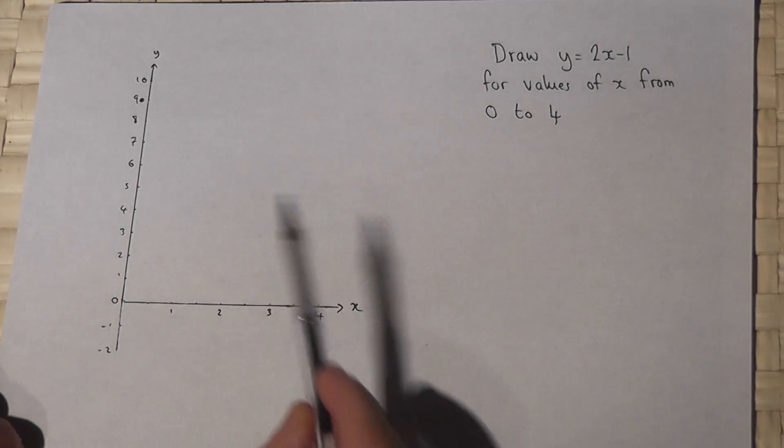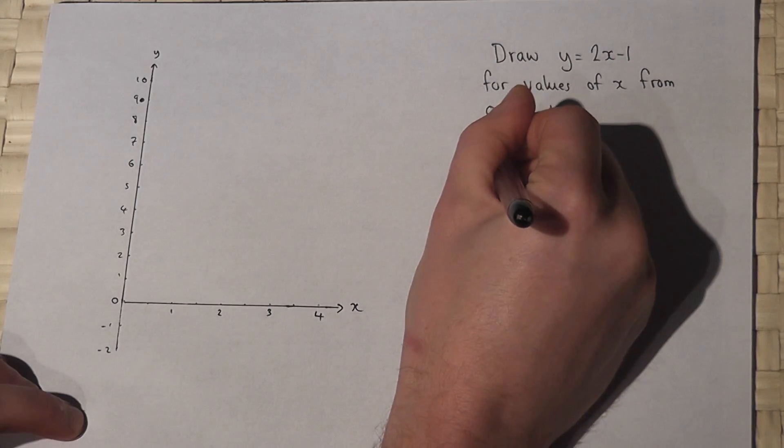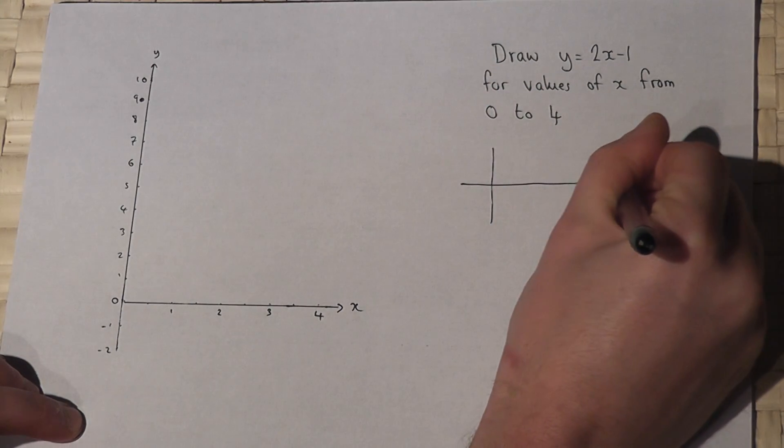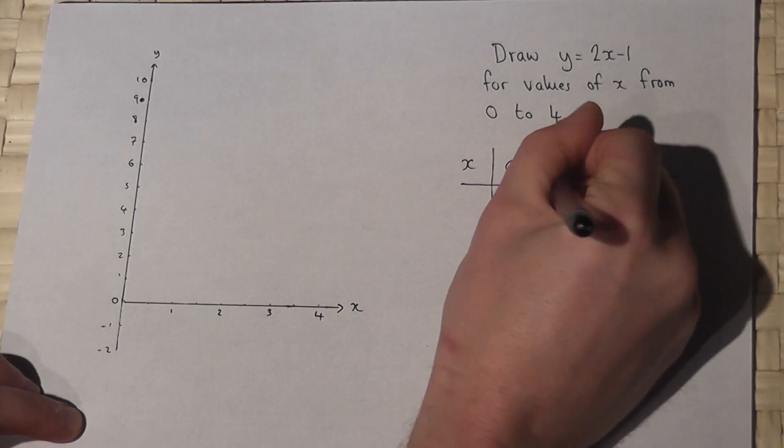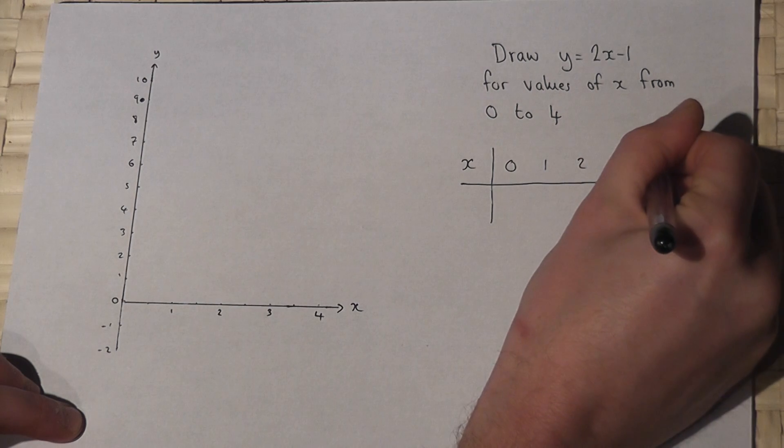Now there are lots of ways of doing this. The most basic way of doing it, which will always work, is to use a table of coordinates. So if I put x, 0, 1, 2, 3 and 4.